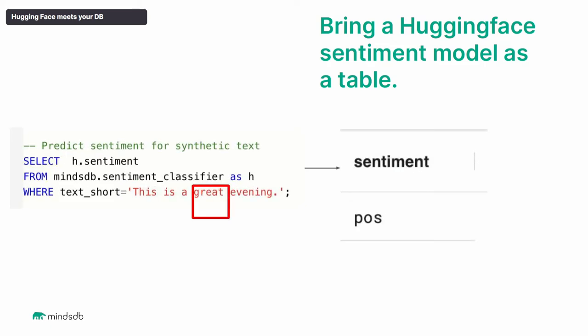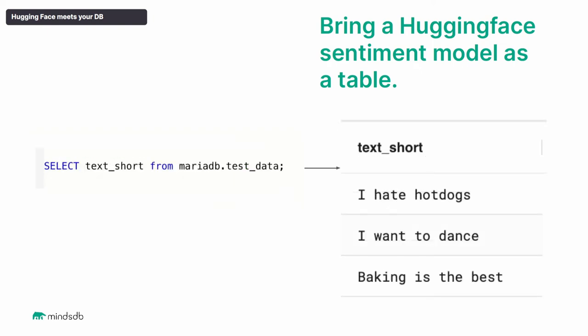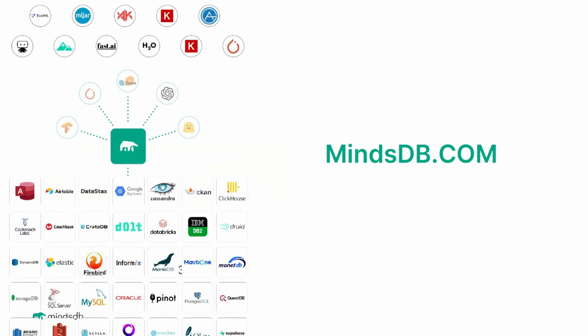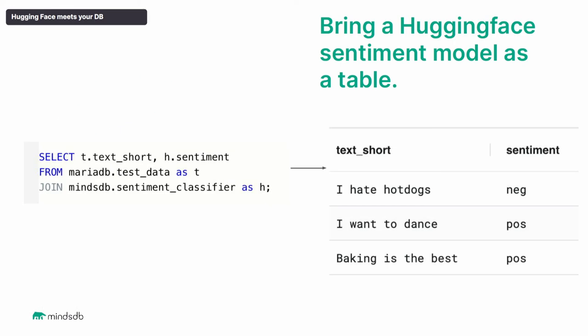The second thing is you can play it the same way — what will happen if the sentence changes to something positive? But the interesting thing becomes when you actually want to do bulk operations. Say, for instance, you want to get the sentiment prediction for a whole bunch of rows. Imagine all the products that you have — you can join the table with the predictor and then get a prediction of the sentiment for each one of them.